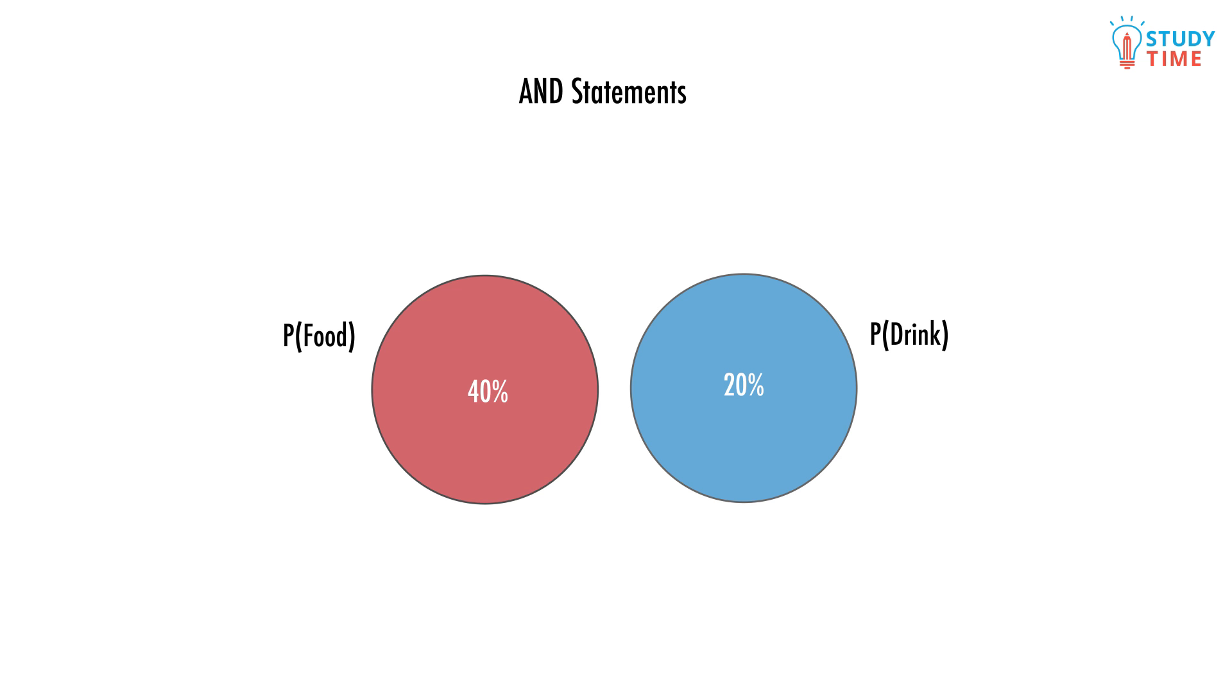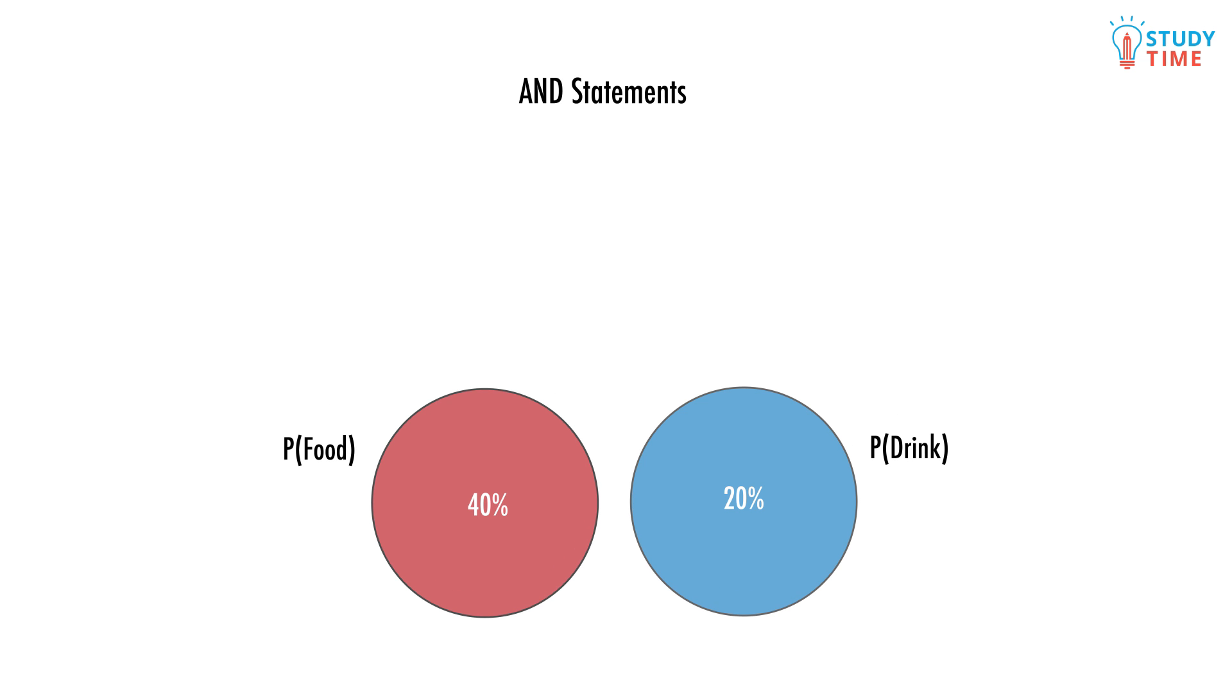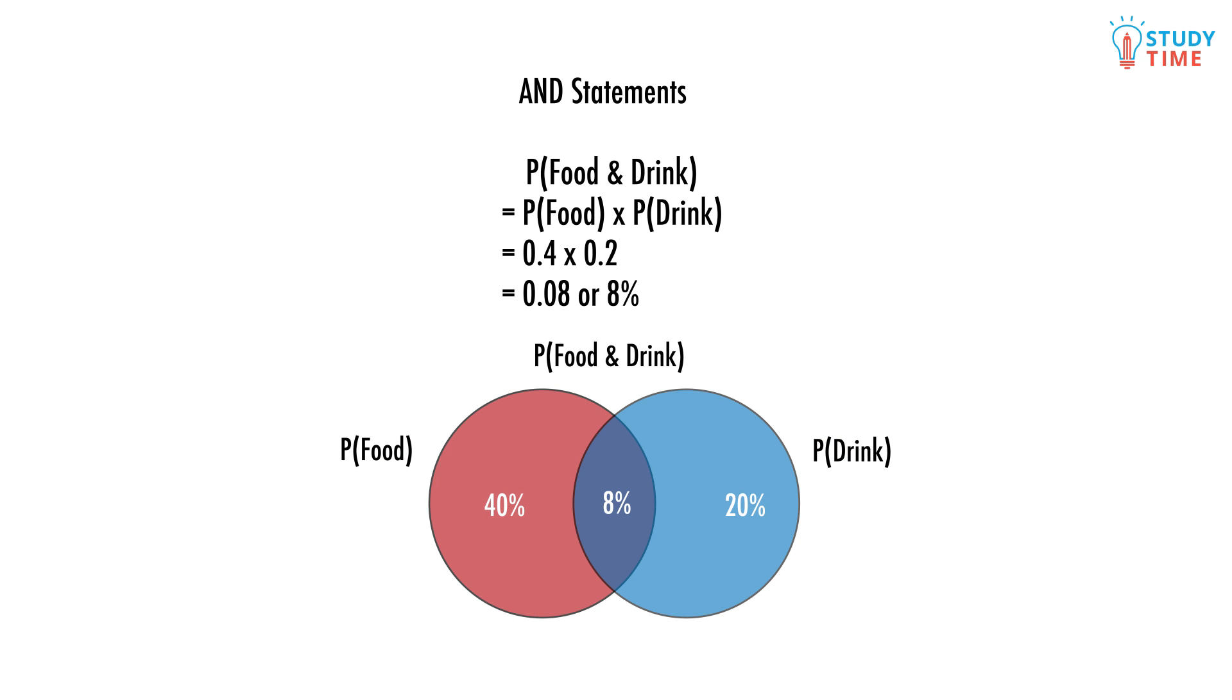There are two other options though. The first is that someone comes in and buys both food and drink. Our AND statement. So what is the probability of someone buying both food AND drink? This is easy. We just multiply our two values. It's easiest to do this as a decimal, but really you can do this however you like. P of food equals 0.4 and P of drink equals 0.2. This new overlap in our Venn diagram is our P of food AND drink equals 0.4 times 0.2 equals 0.08 or 8%. Easy right?